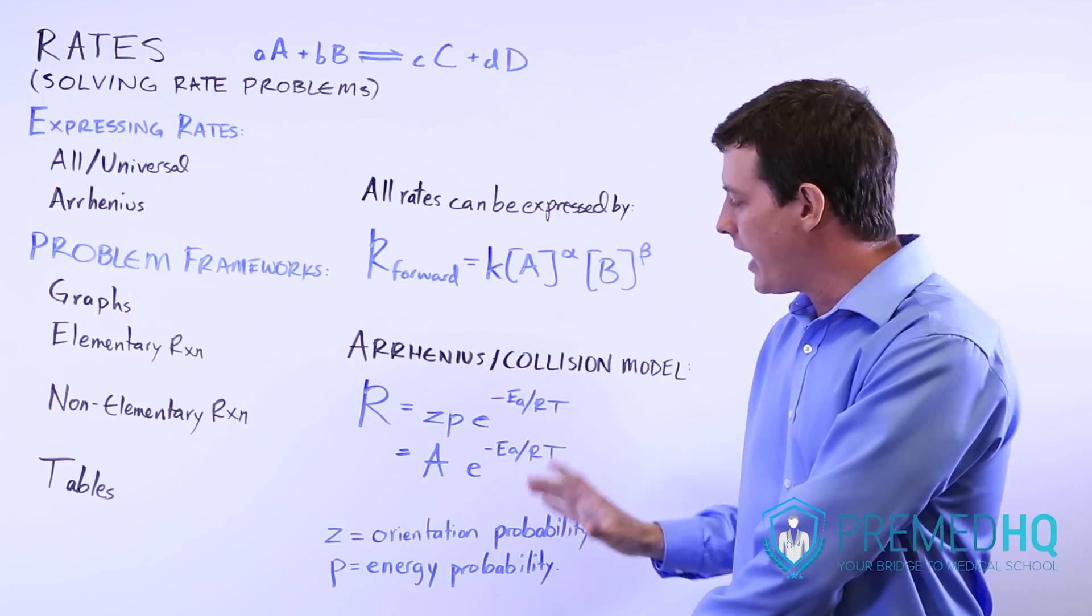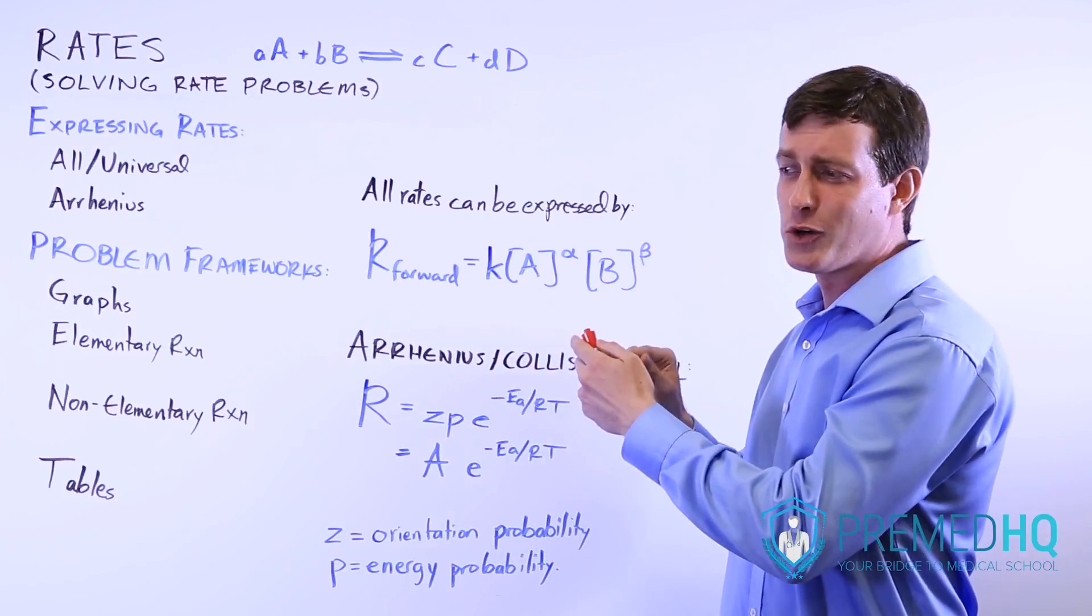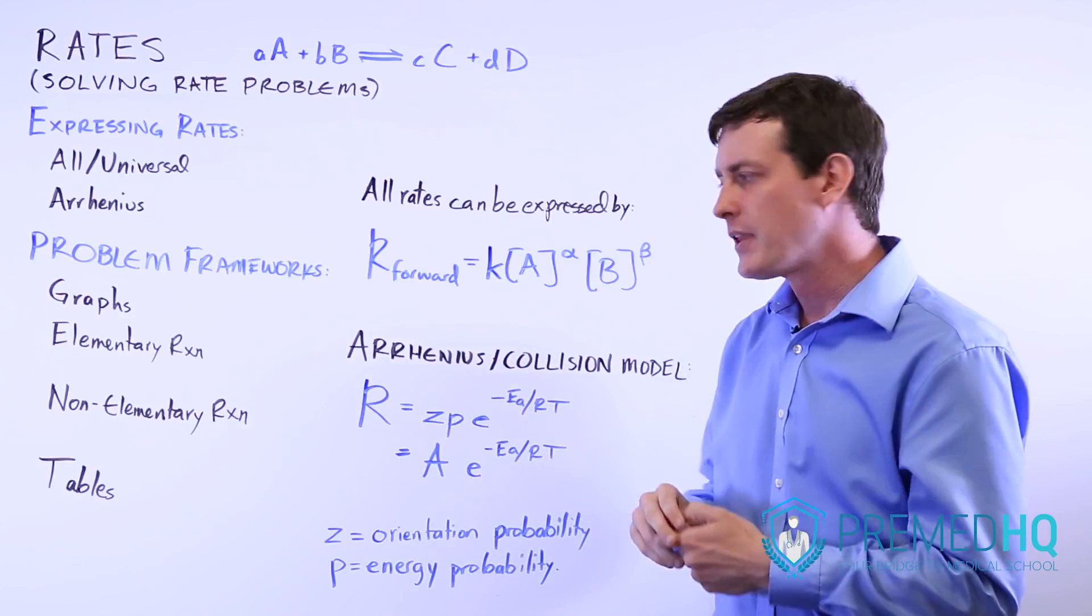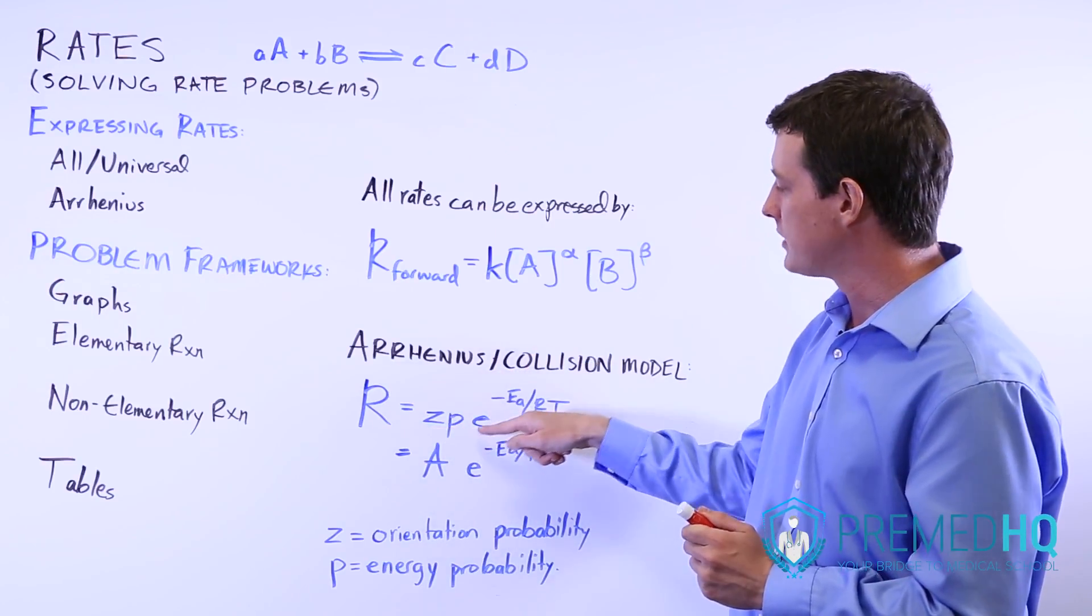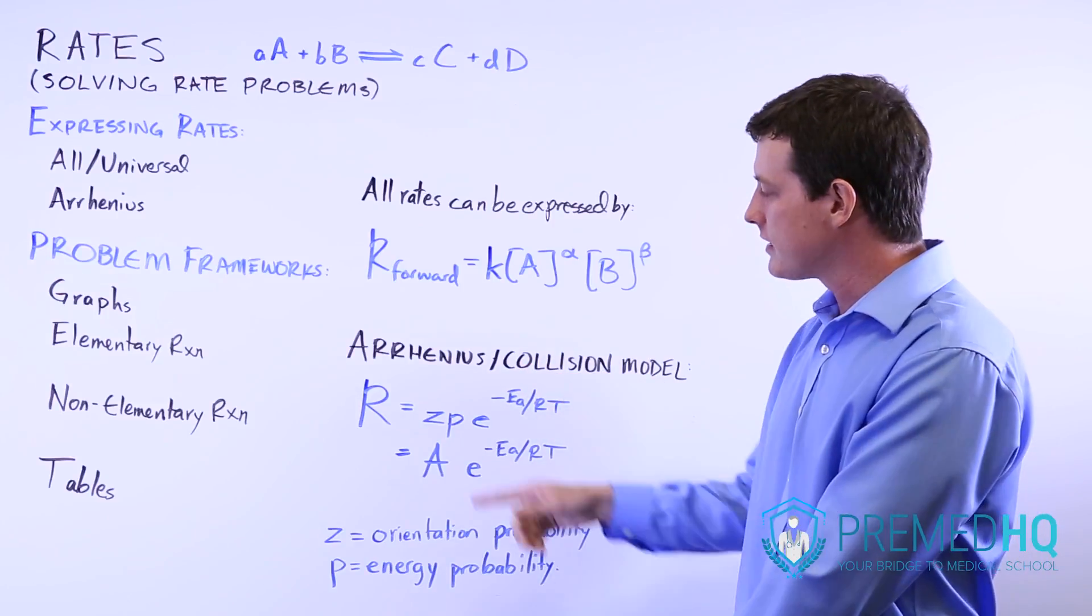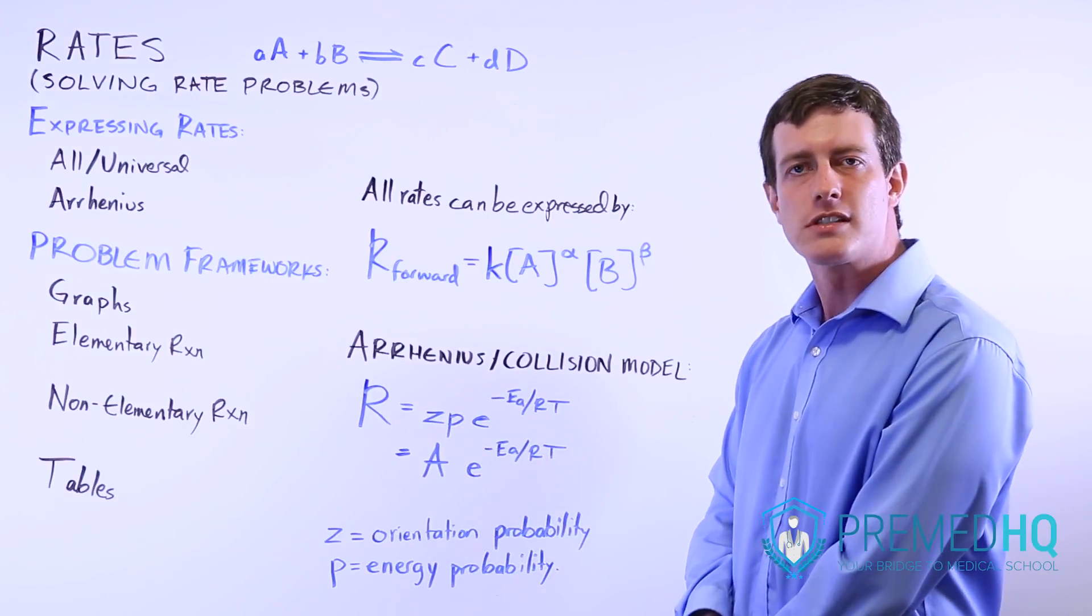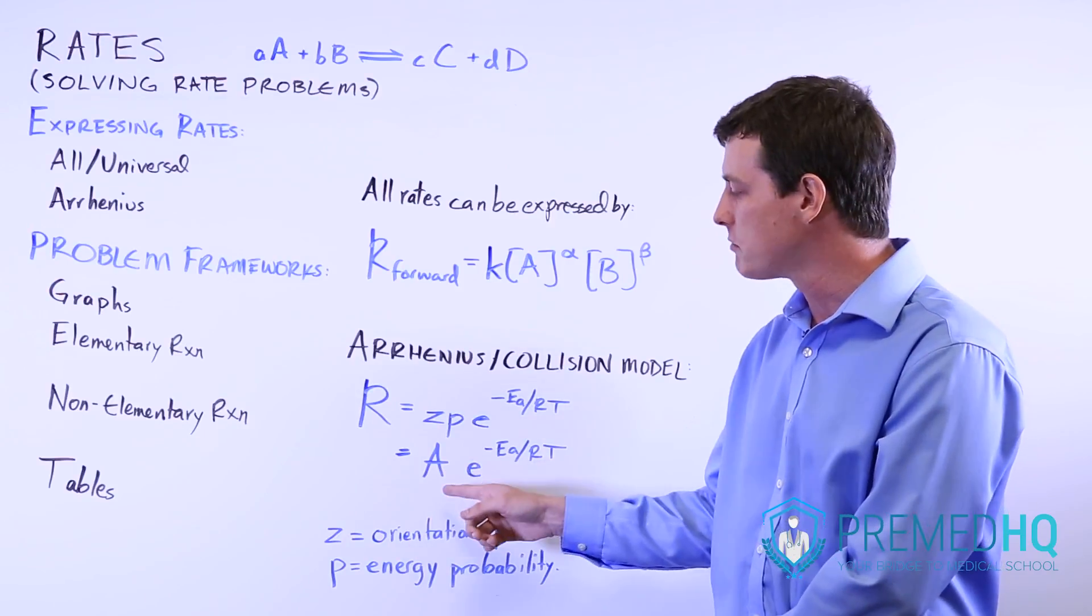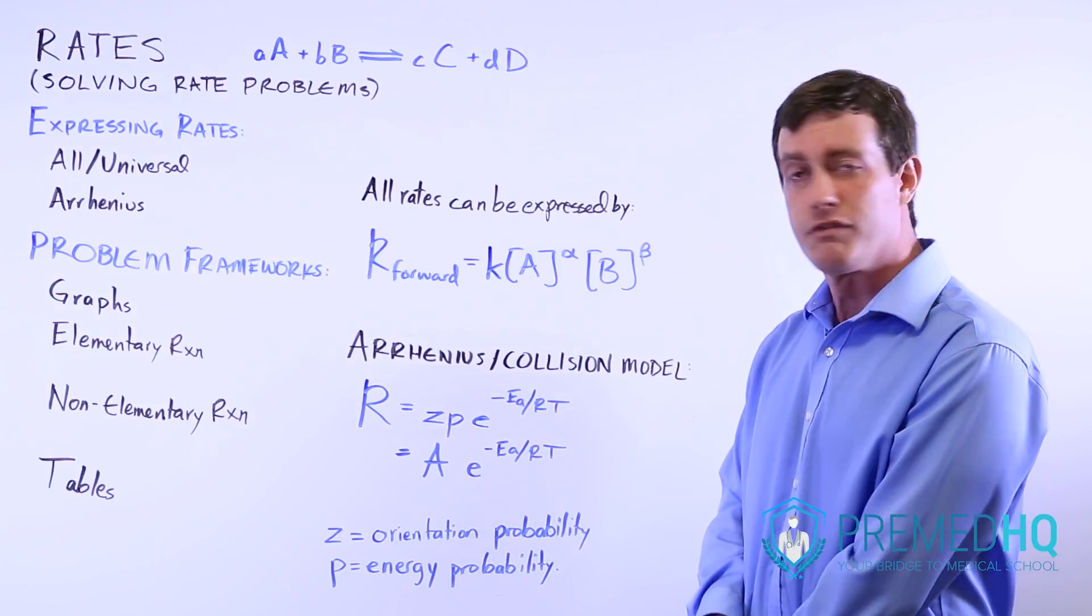P is the energy probability, the probability that two atoms colliding in the right orientation will have sufficient energy that a reaction can actually take place. So you might see rates expressed as Z times P times e to the negative activation energy over RT. Or you might see Z and P combined into a simple Arrhenius factor, listed as capital A, and that can be experimentally determined as well. It's just Z times P, and then the other part is e to the negative activation energy over RT.